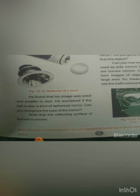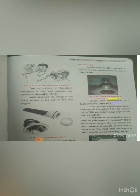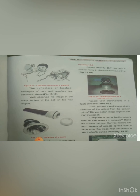The reflecting surface of the bell is convex, which is why the image appears small. Now repeat Activity 15.7 with a convex mirror instead of a concave mirror, record your observations, and check: could you get a real image at any distance? Also, can you recognize the mirrors used as side-view mirrors in scooters? These are convex mirrors.